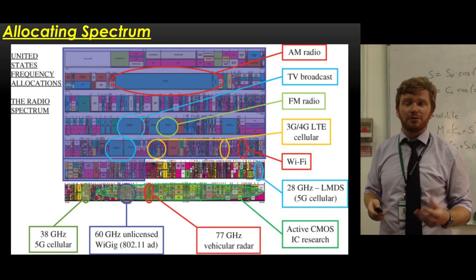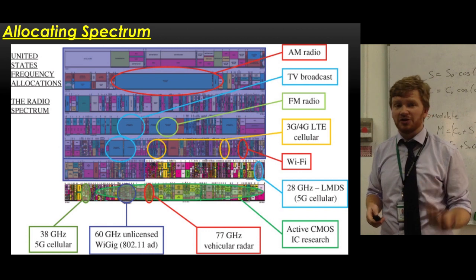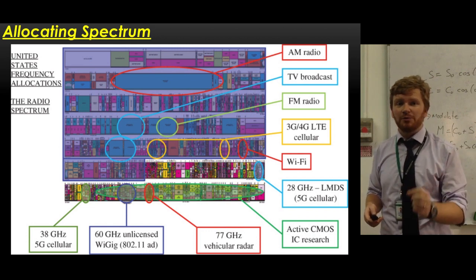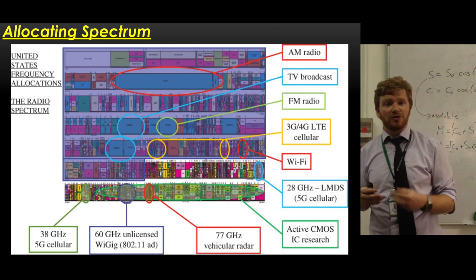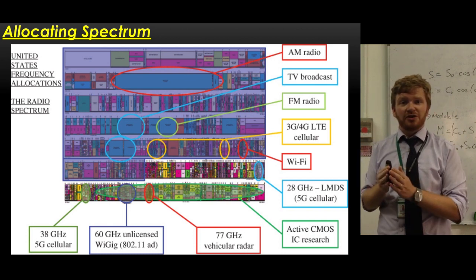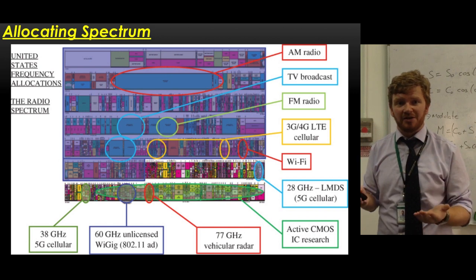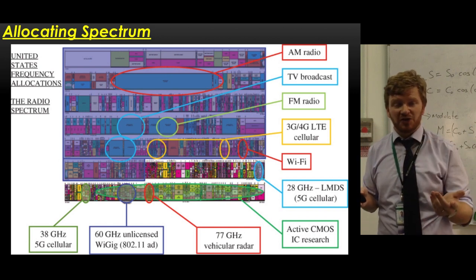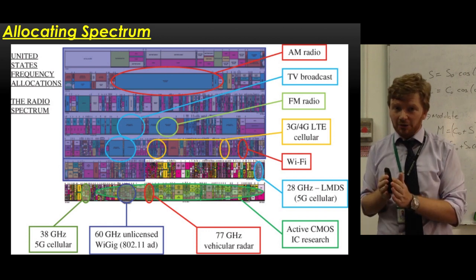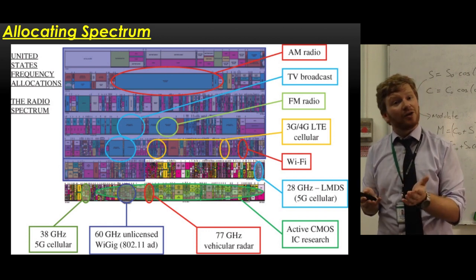And this is where frequency allocation comes in. In most countries, the government will allocate certain frequencies to certain users. They'll have a license and only they will be allowed to broadcast in that range of frequencies. If you want to have very high quality music, then you're going to need quite a wide range of frequencies so you can get big bandwidth, big sidebands. If you're just transmitting voice data, then you can have a much narrower band of frequencies and pay a lot less.